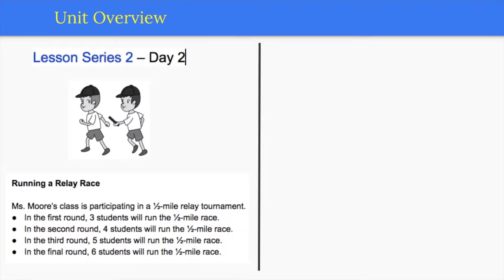One example of how students will explore division using a partitive sharing model is in lesson series 2, day 2. They determine the distance students run in a half-mile relay tournament in rounds with 3 students, 4 students, 5 students, and 6 students.